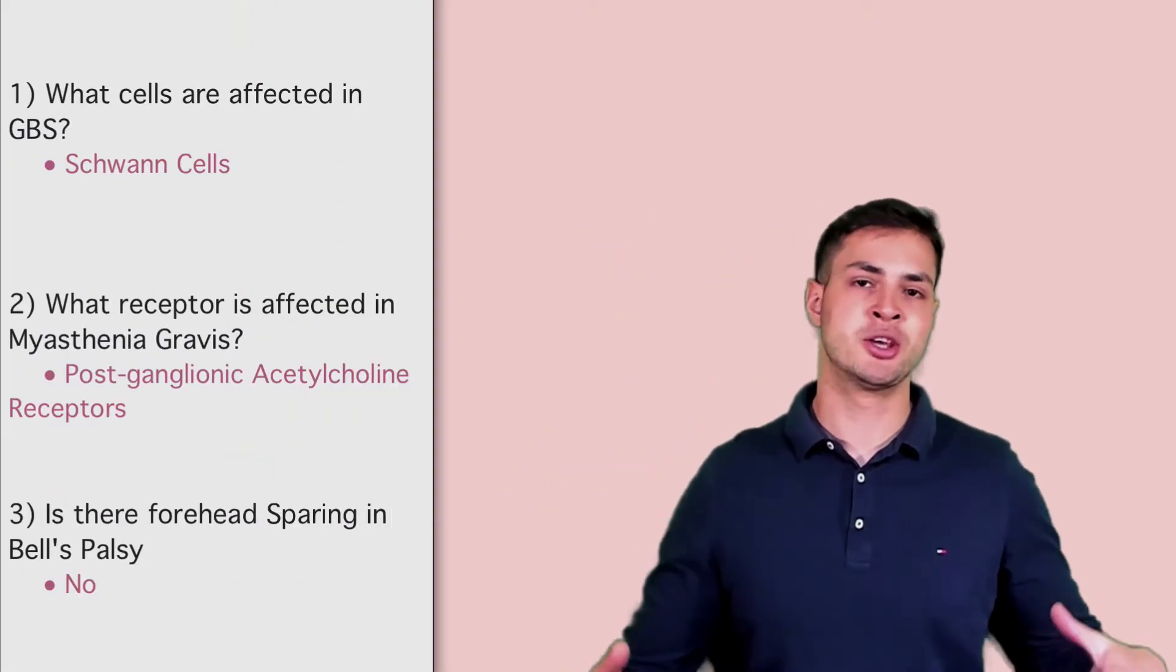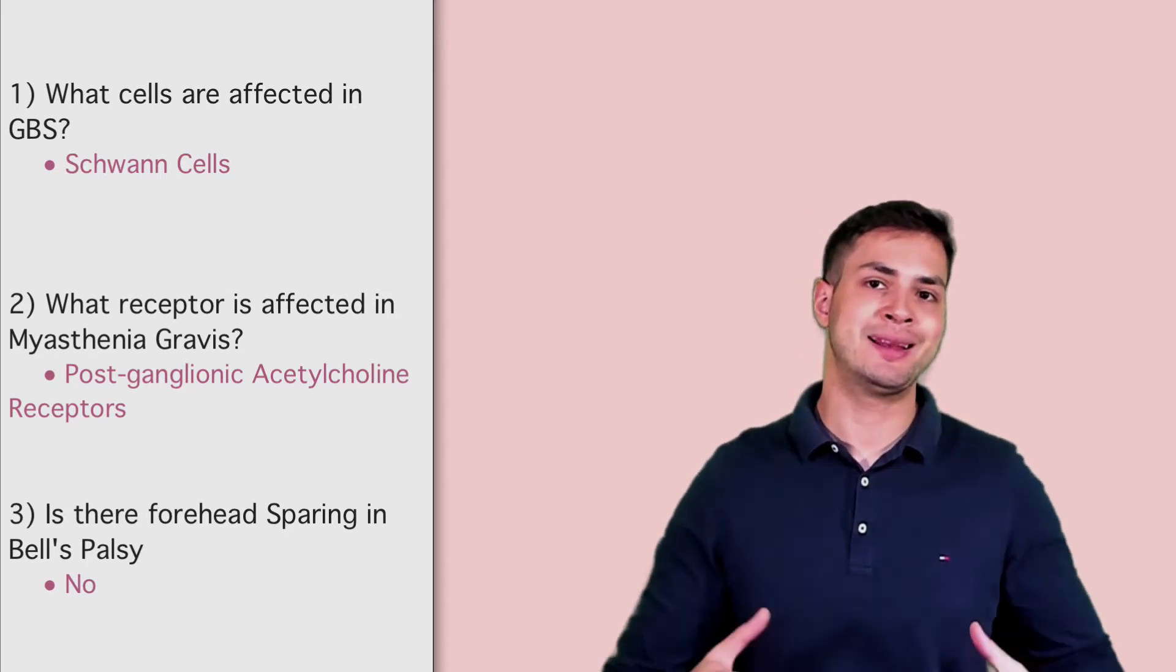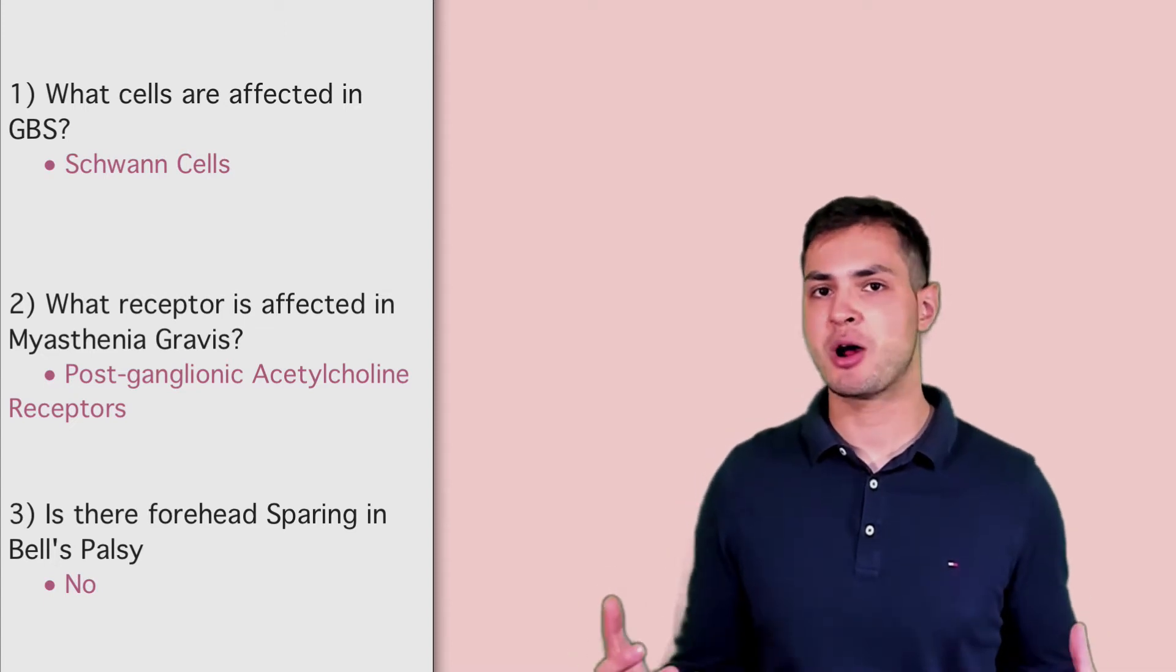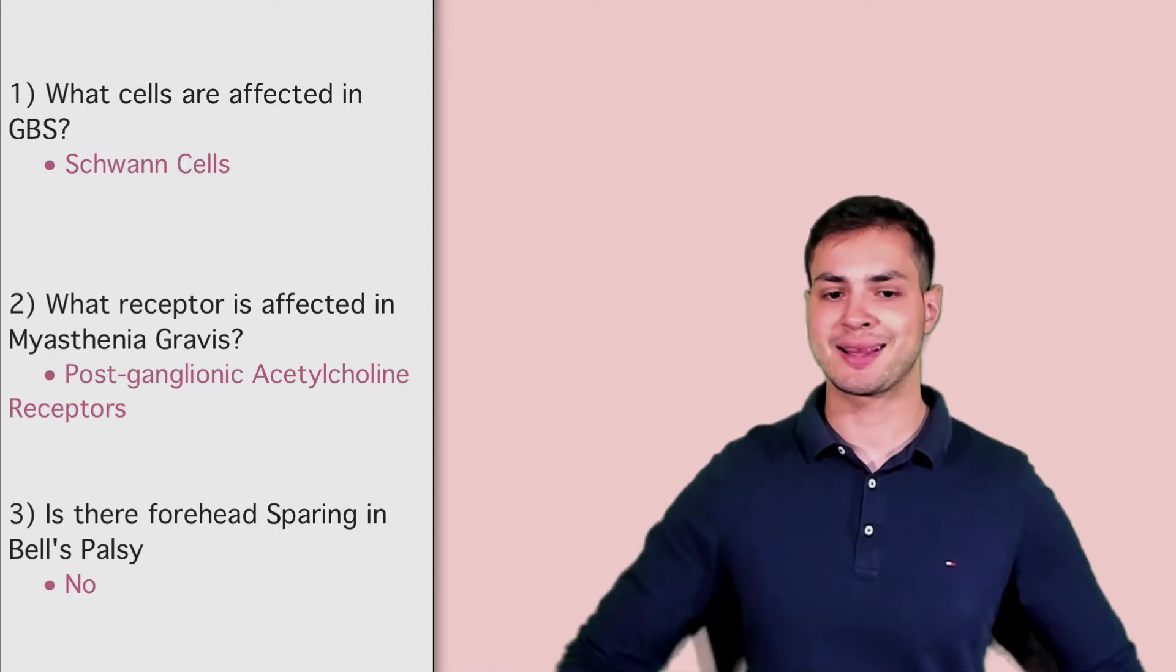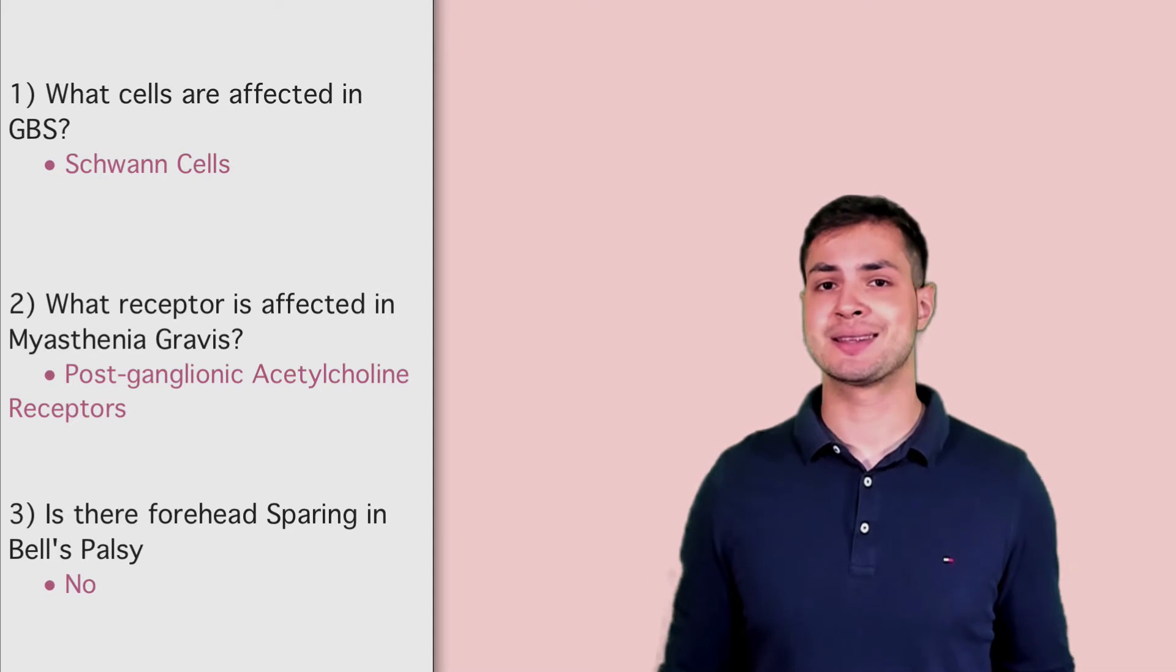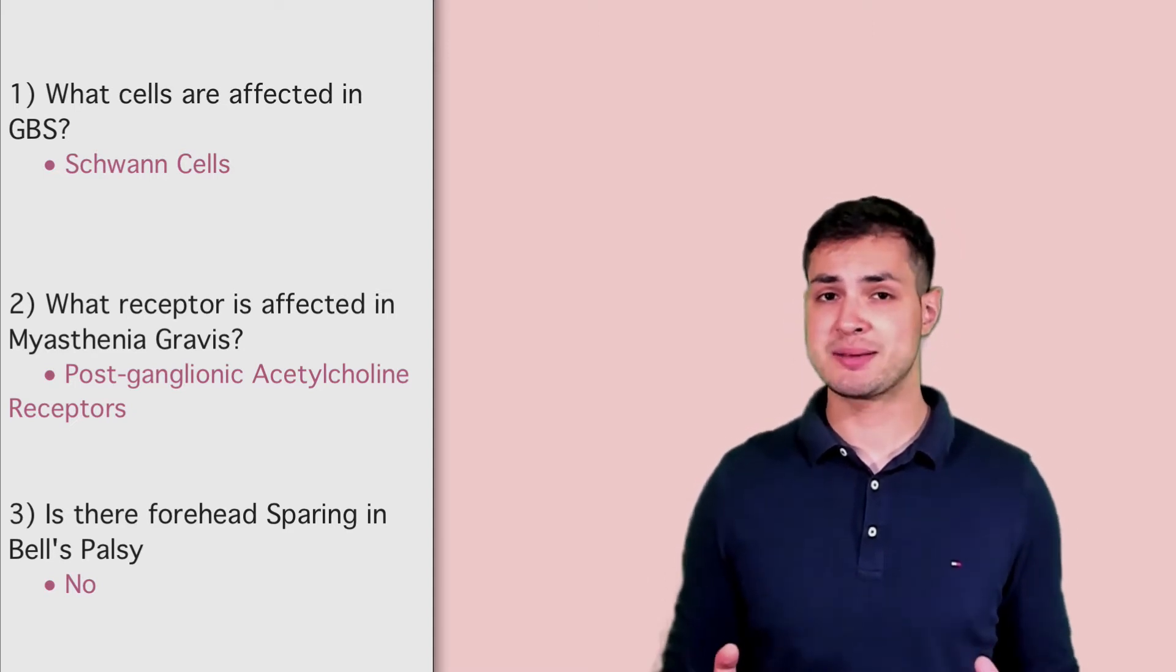Okay guys, so the answers: Number one, Schwann cells are affected in Guillain-Barre syndrome. Schwann cells are the myelination cells of the peripheral nervous system. So when Guillain-Barre happens and affects the Schwann cells, you get a lower motor neuron attack and ascending paralysis. Number two, myasthenia gravis is an autoimmune attack against the post-synaptic acetylcholine receptors.